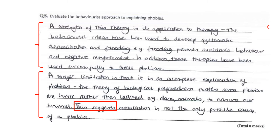This next question evaluates the behaviourist approach to explaining phobias — again, a four-mark question with two points. Both start with a nice sentence starter: 'a strength of this theory' and 'a major limitation is.' The second paragraph ends with 'this suggests that.' An issue is that students might write 'a strength of this theory is its application to therapy' and just mention systematic desensitisation and flooding. But a higher-level answer explains how the theory is used to create those therapies — for example, flooding prevents avoidance behaviour and negative reinforcement. That adds more depth to the evaluation.